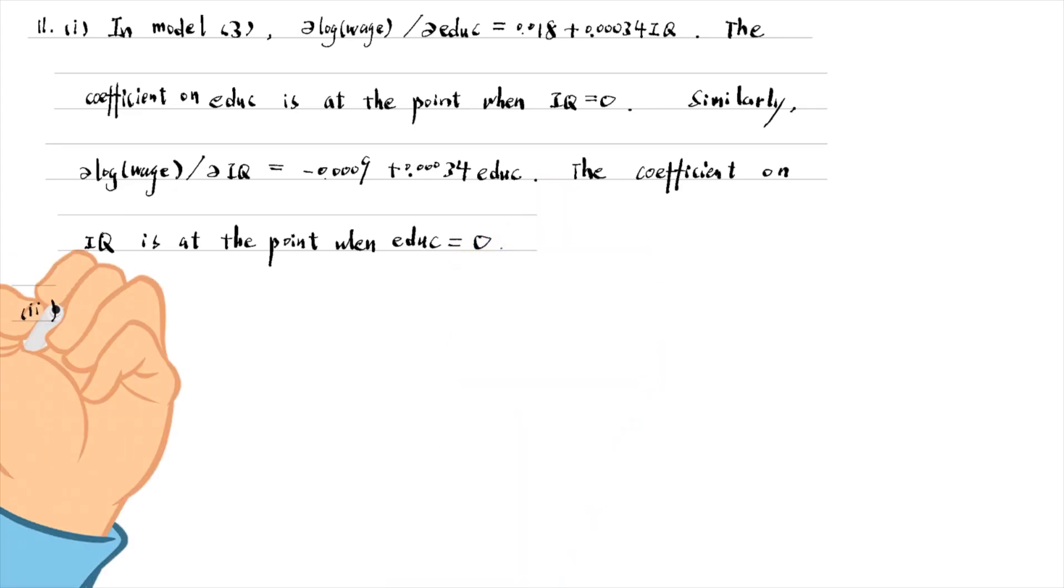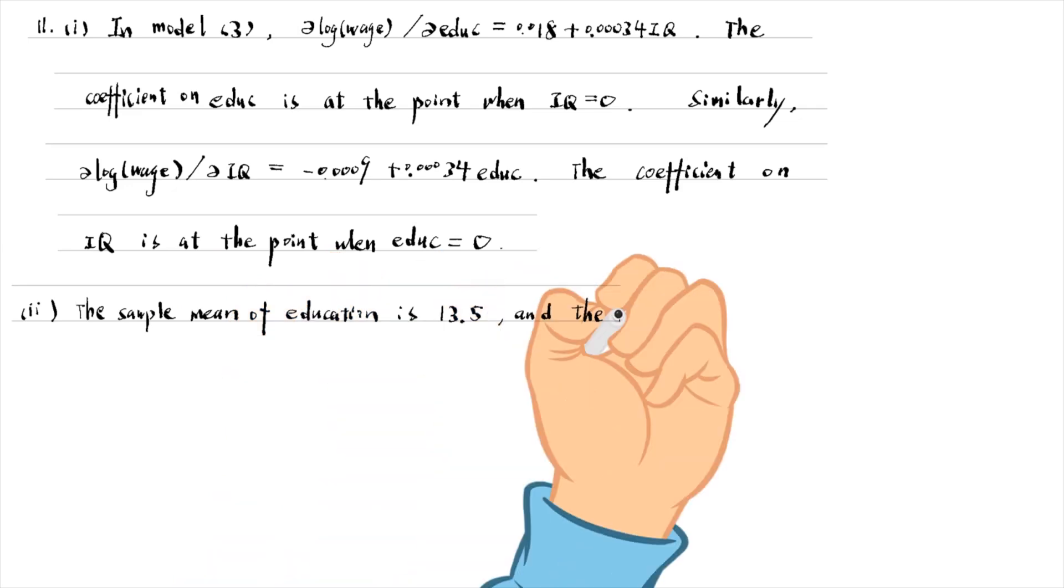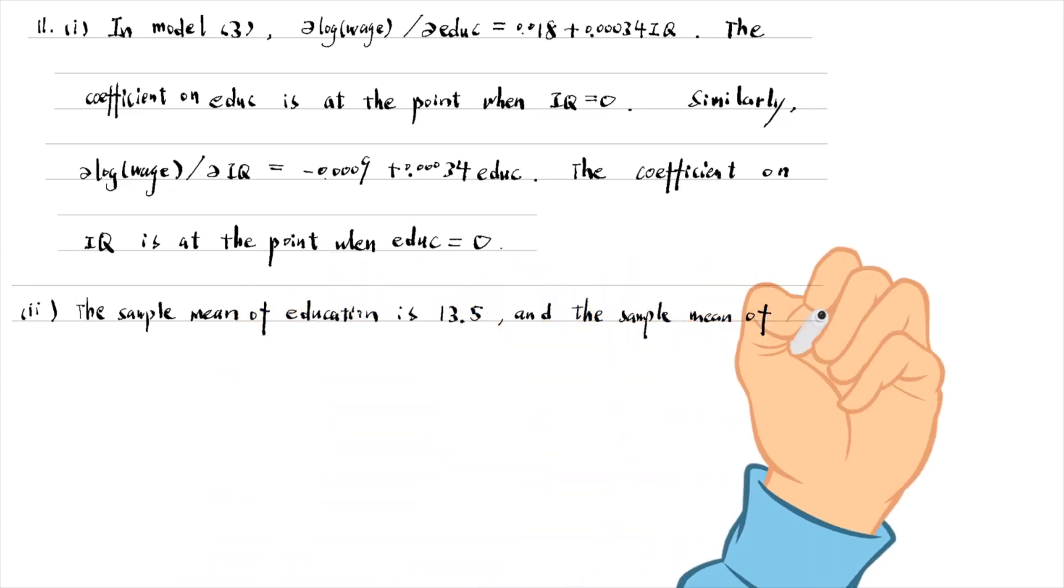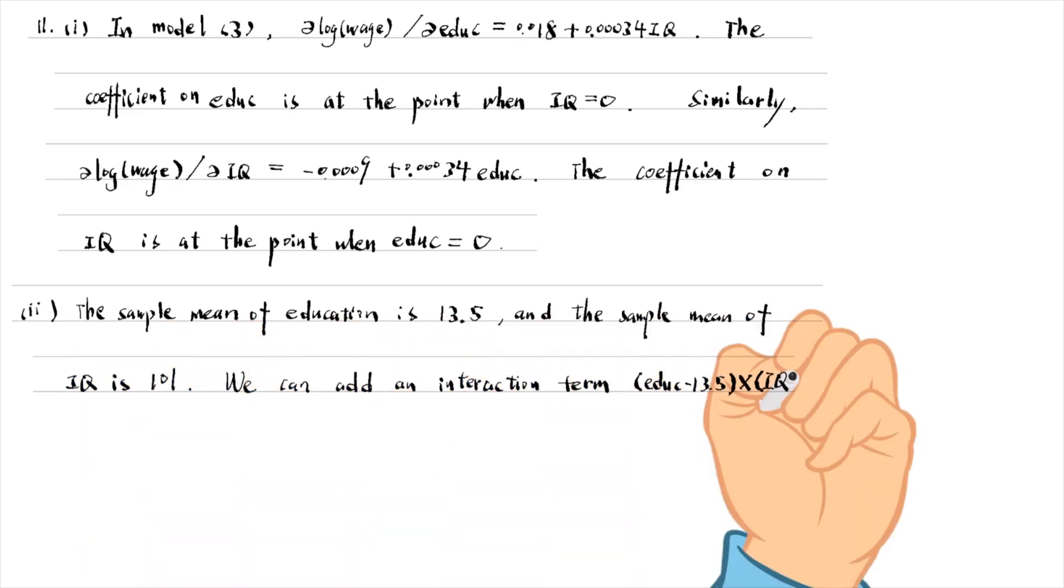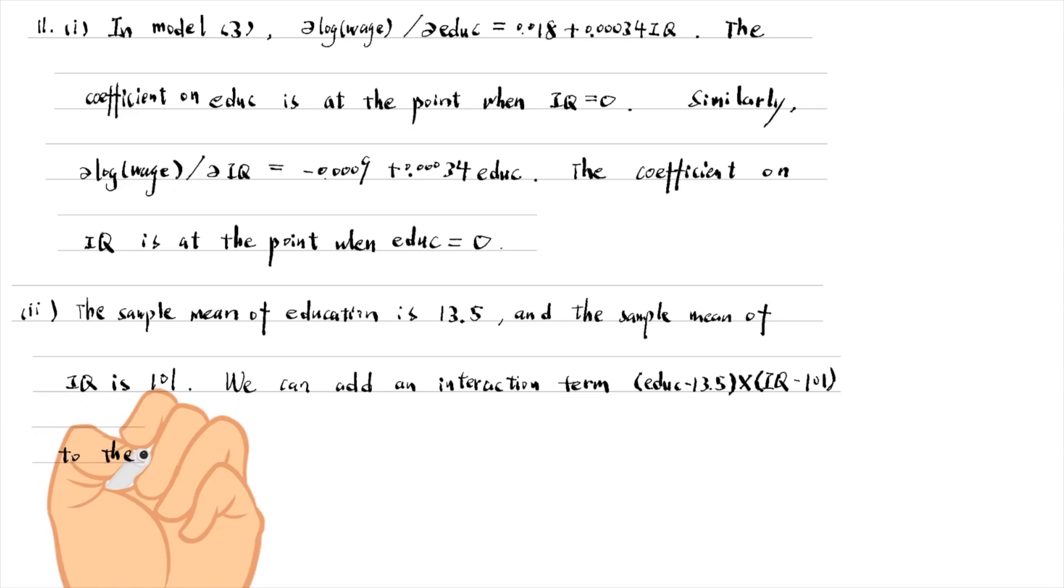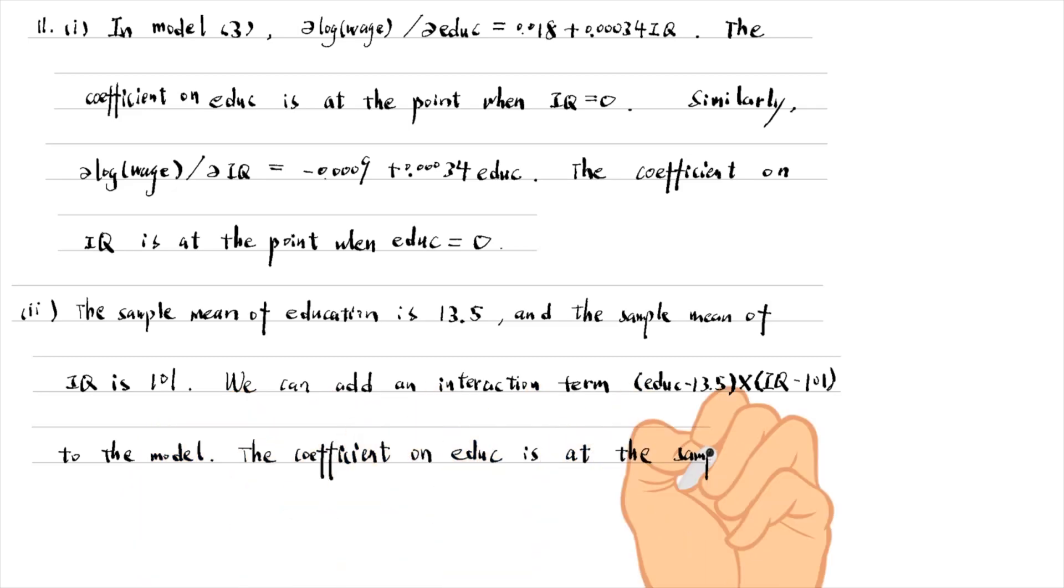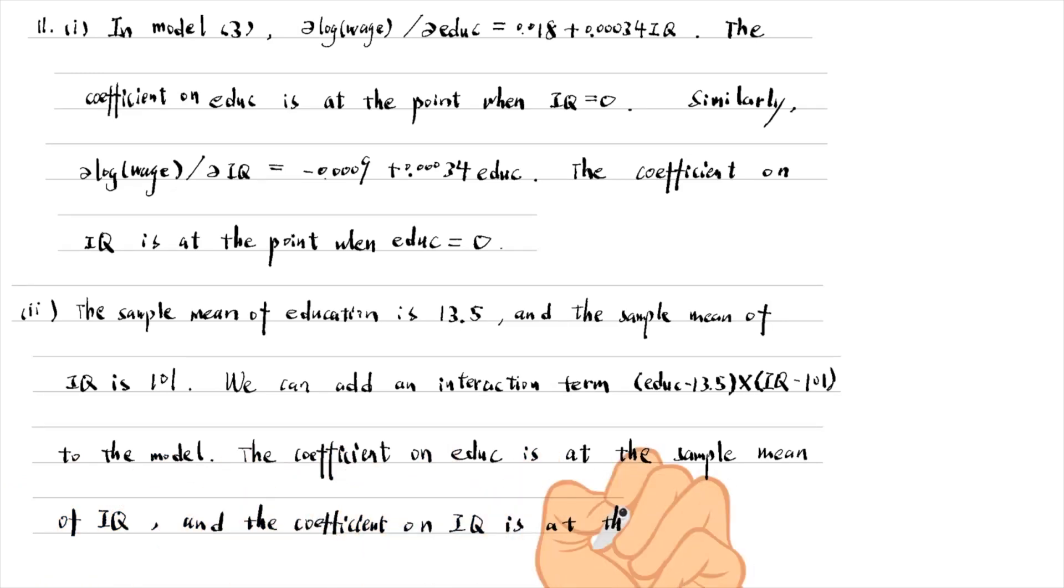For part 2, the sample mean of education is 13.5 and the sample mean of IQ is 101. We can add an interaction term, education minus 13.5 times IQ minus 101 to the model. The coefficient on education is at the sample mean of IQ, and the coefficient on IQ is at the sample mean of education. The estimates are reasonable now and statistically significant at the 1% level.